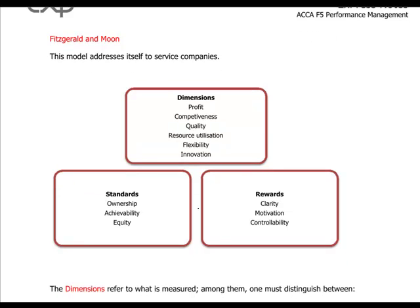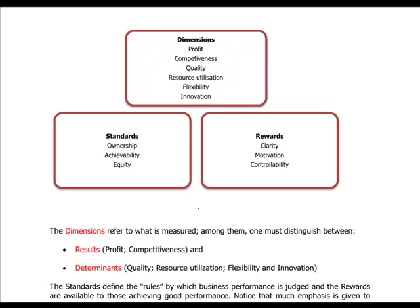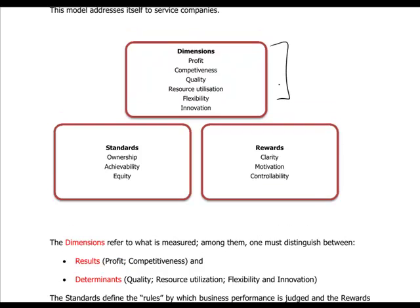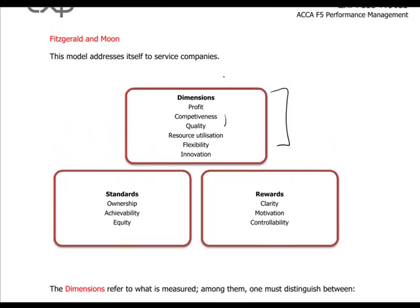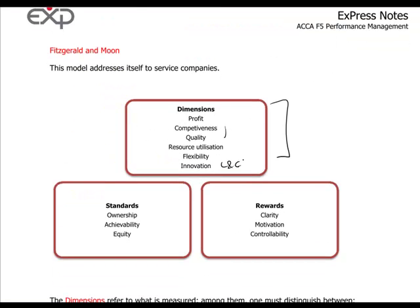Fitzgerald and Moon's approach is pretty similar, making a difference between dimensions, standards, and rewards. Dimensions are similar to the balanced scorecard: profit, competitiveness on market, and quality of products — these two kept together as customer focus. Resource utilization, innovation, and flexibility are similar to internal business processes and learning and growth — learning and growth can be associated with innovation, while resource utilization and flexibility relate to internal business processes.